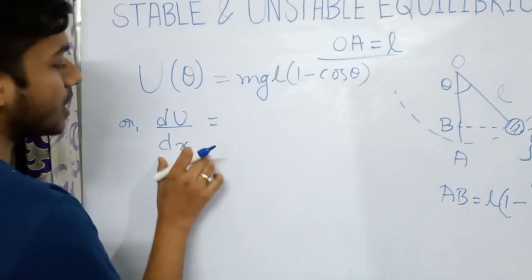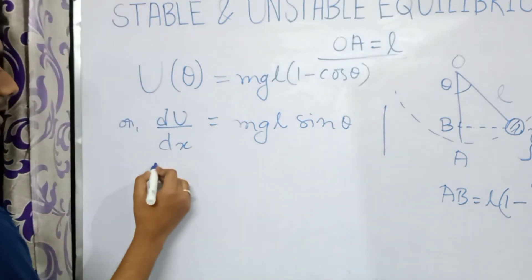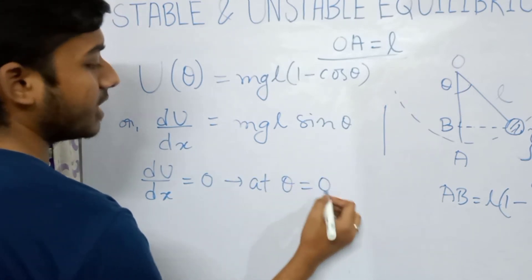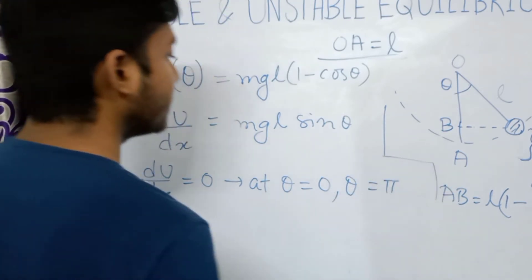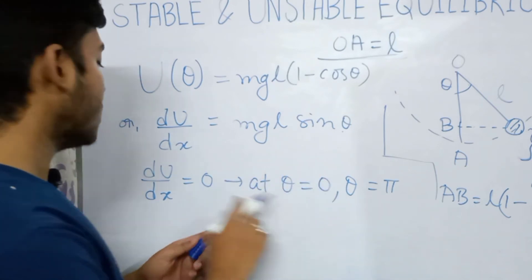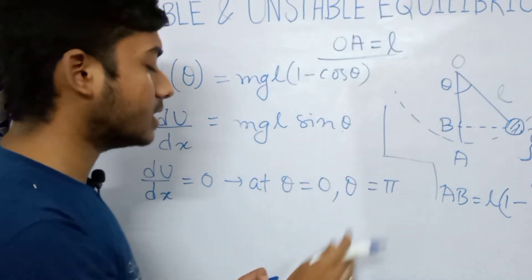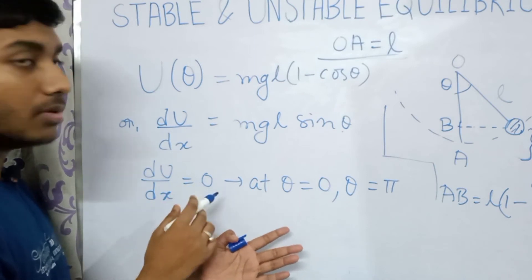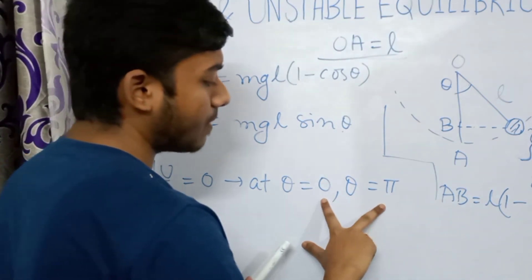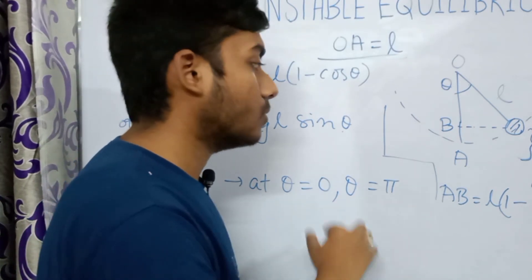The derivative dU/dtheta will be mgl sin theta. We can easily say that dU/dtheta equals zero at theta equals 0 degrees and at theta equals pi. Since dU/dtheta equals zero at these two values, and we have discussed that when dU/dx equals zero the equilibrium occurs, we can say that there are two equilibrium points: at theta equals 0 and theta equals pi. We will now see the difference between these two equilibrium points.